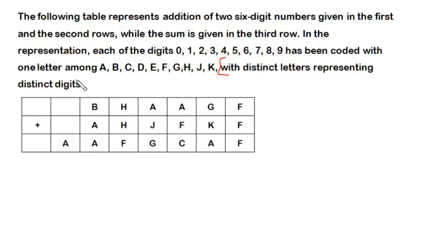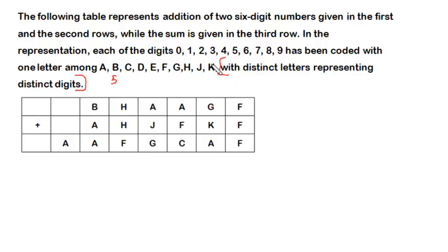Each of these letters will be assigned a distinct digit among zero to nine. To clarify: if B is assigned digit five, then no other letter will be assigned digit five, and digit five will not be assigned to any other letter. So each letter represents a distinct digit — that's the simple meaning of the statement.